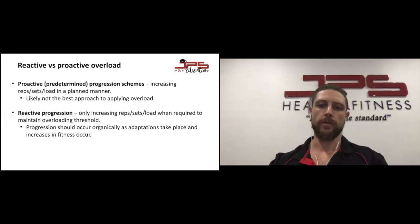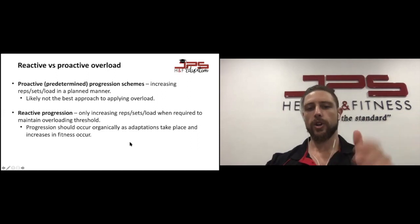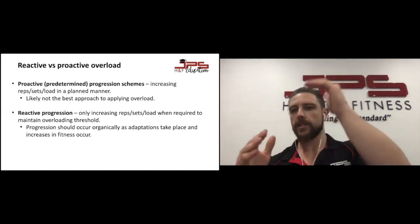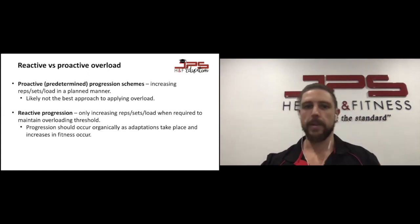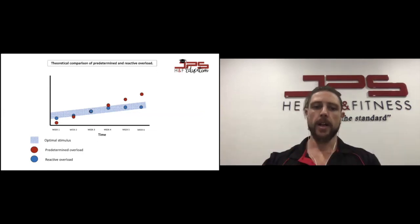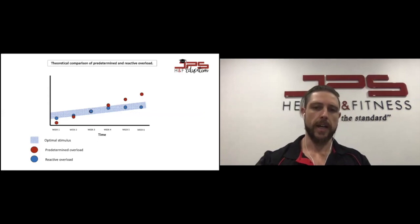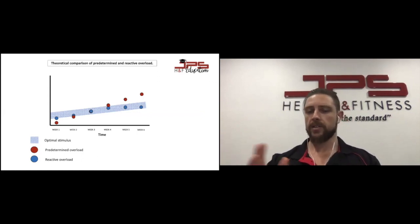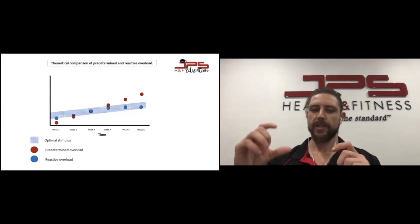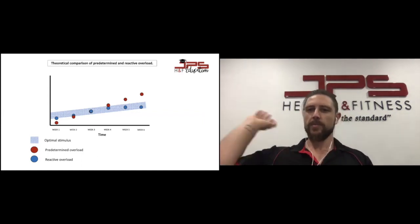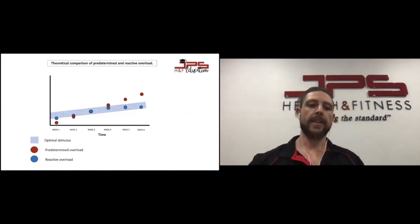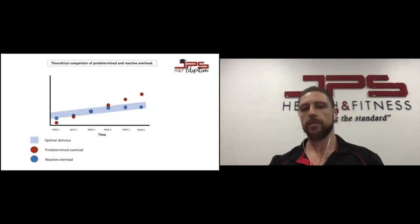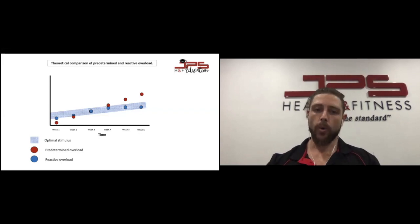Progression should occur organically: as adaptations take place, we increase the stimulus to keep training hard. Comparing predetermined proactive overload versus reactive overload — the blue checkered band represents the adaptive range. With a predetermined overload adding two and a half kilos per week, we might eventually overshoot the adaptive range completely or fall under it. That's why we need to measure and monitor, adjusting the training plan as necessary to stay within the optimal stimulus range.